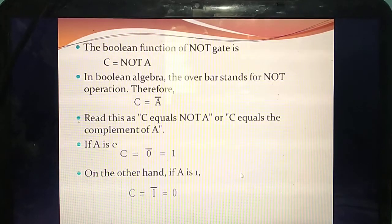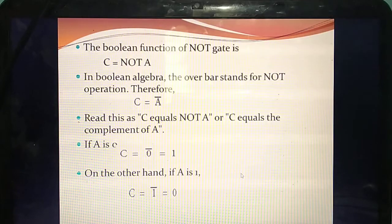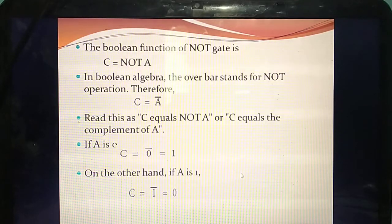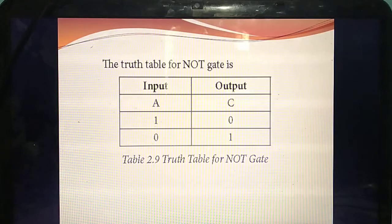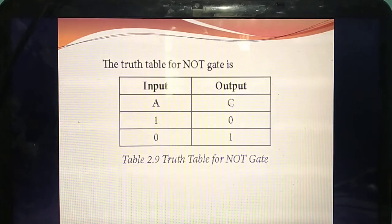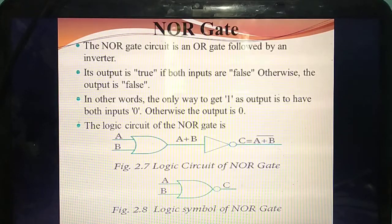In Boolean function, how do you read this? C equal to NOT A — because there is only one input. You read it as NOT A. What is the meaning? C equal to A bar. How does it work? 0 bar means 1; 1 bar means the answer you get is 0. Three important logic gates studied: AND gate, OR gate, and NOT gate. Input is 1 means answer you get 0 — this is the truth table of NOT gate.